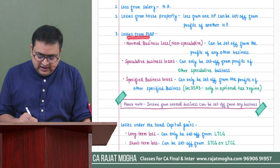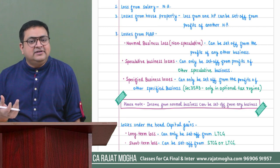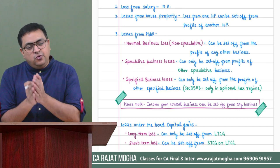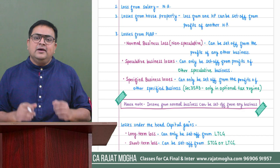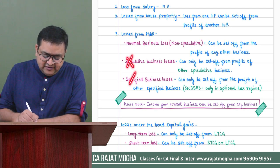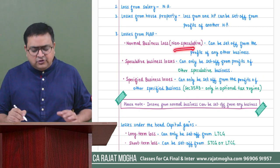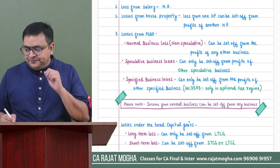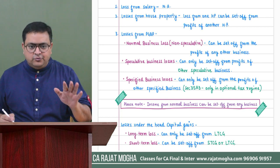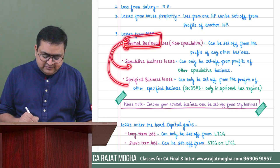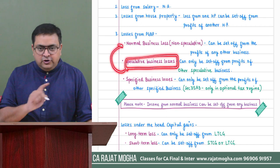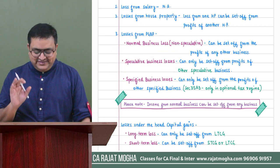For normal business — also called non-speculative — normal business losses can be set off from any other business, including speculative and specified businesses. However, the vice versa is not correct. If a speculative business has a loss, it cannot be set off from a normal business. But normal business losses can be freely set off from any type of business.